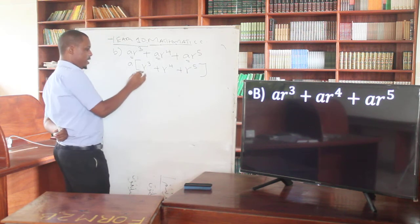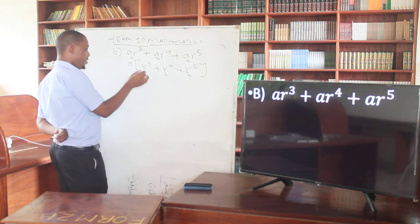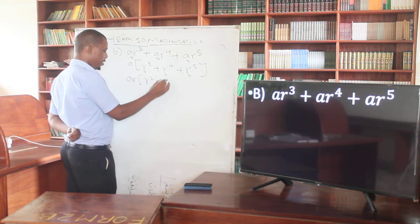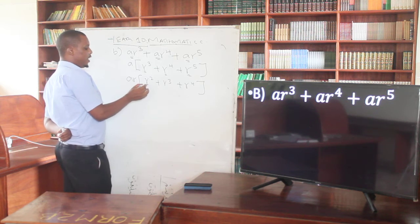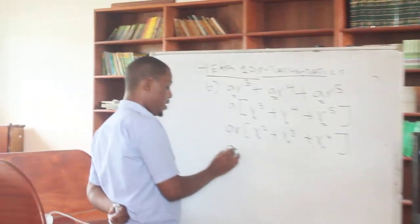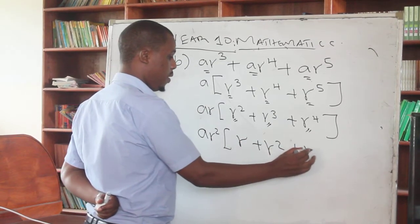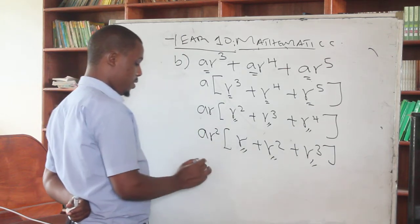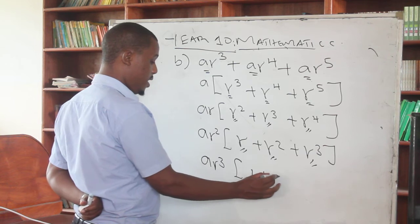Again you can see another common factor — there is a letter 'l' which is common in all three terms. Here there is l³, there are 3 l's; there are 4 l's; there are 2 l's. So factoring out l³: here 3 minus 3 leaves nothing, then 4 minus 3 remains 1, and 5 minus 3 remains 2. So removing l³ outside, inside the bracket we have: 1 plus l plus l².